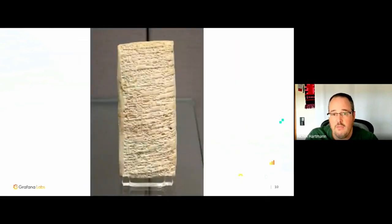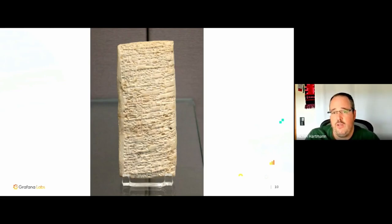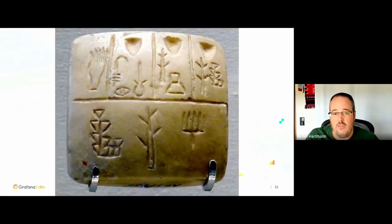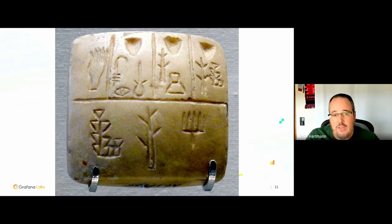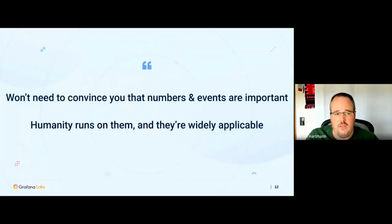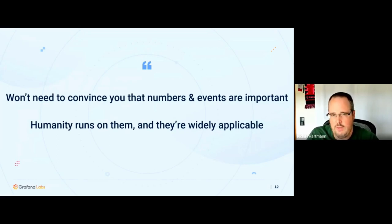Even farther back, 4,000 years ago, the first letter which we know of is about the wrong grade of copper being delivered, about provisional payment being made, and the seller being rude to the buyer's servant. Going back 2,000 years more — 6,000 years ago — this is probably the oldest writing we are currently aware of. It talks about who owned which slaves and when. The point is, I don't need to convince you that numbers and events are important and inherently tied to humanity — how we operate, and the value which we create and distribute and trade.